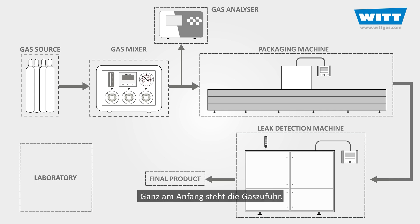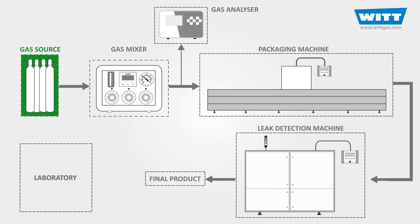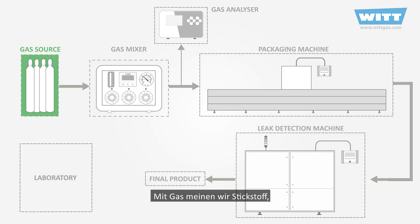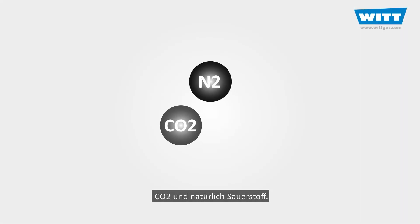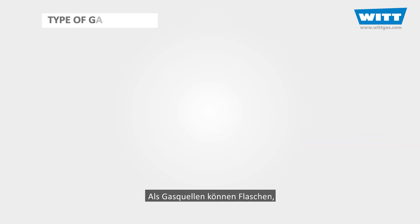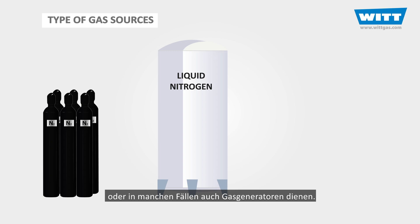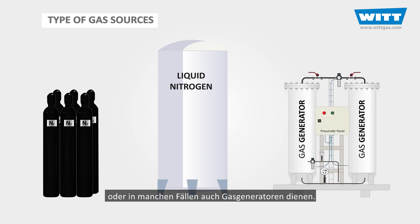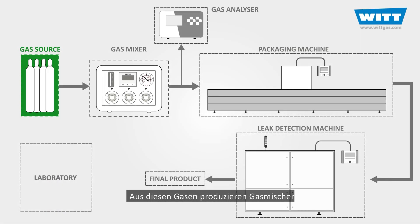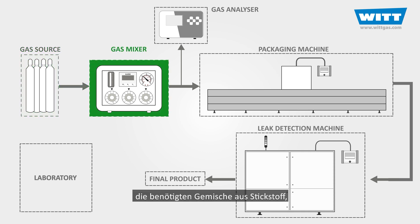At the very beginning, there are the gas sources. By gas, we mean nitrogen, carbon dioxide, and of course, oxygen. These gas sources can be in the form of cylinders, cryogenic tanks, or in some cases, gas generators. To start the process, these gases get transferred into the gas mixer to create the desired mixture of nitrogen, carbon dioxide, and oxygen for different types of foods.